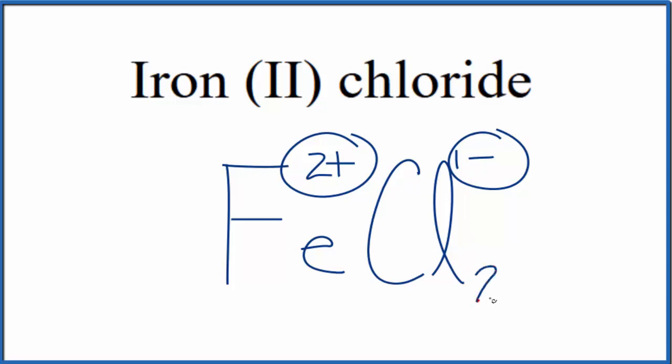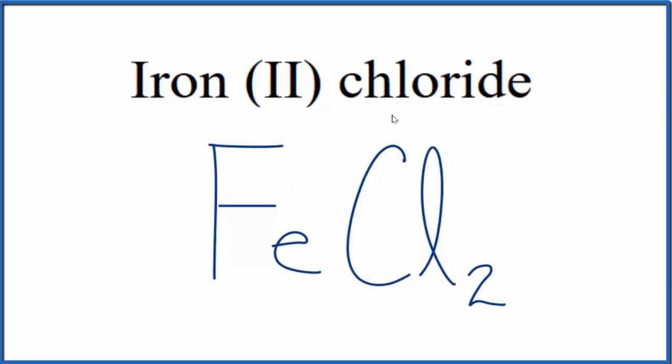So we put a 2 out here, remove these symbols, and this is the formula for Iron (II) chloride, FeCl2. This is Dr. B, and thanks for watching.